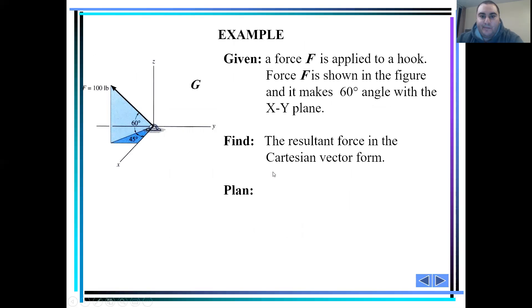Now, let's take an example. We have a force F which is applied to this hook. Force F is shown in the figure and it makes a 60 degrees angle with the xy plane. And as you can see, there's a 45 degree angle between the projection of the F vector on the xy plane and the x plane. The resultant force in the Cartesian vector form is what we have to find out.